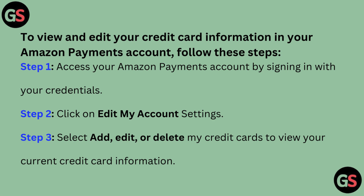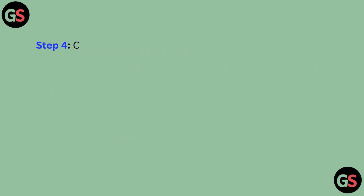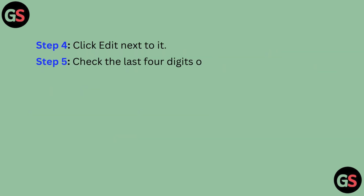Access your Amazon Payments account by signing in with your credentials. Step 2: Click on Edit My Account Settings. Step 3: Select Add, Edit, or Delete My Credit Cards to view your current credit card information.